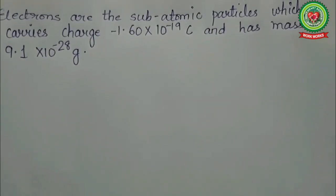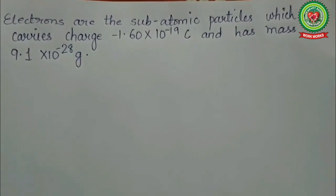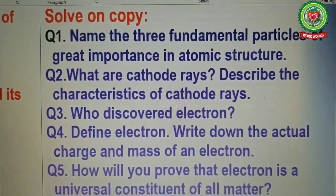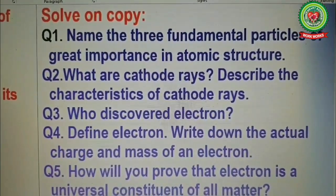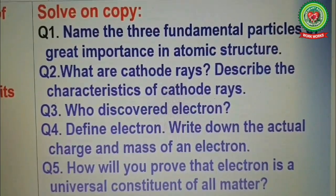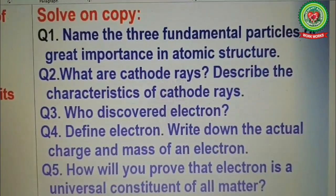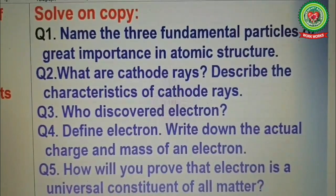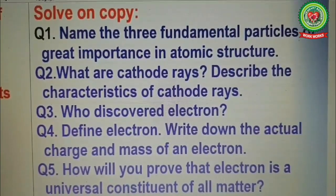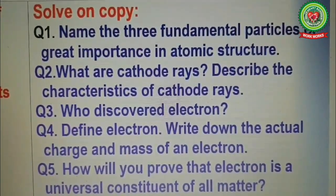Cathode rays are defined as negatively charged rays that move from cathode to anode. From today's class you are able to study the topics flashing on your screen. You need to do these questions in your copy, and with the help of the video you will be able to solve the questions.